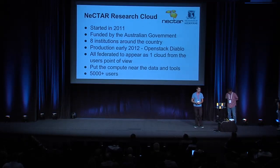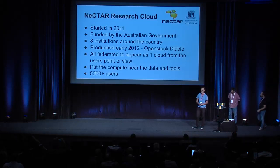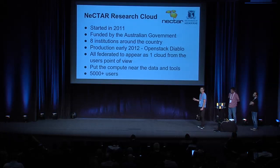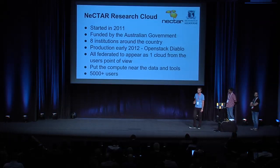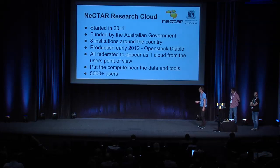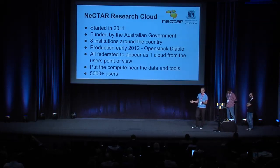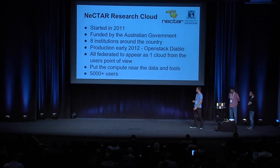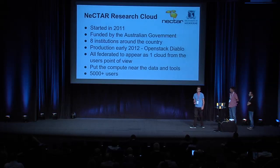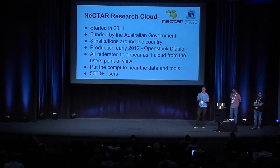We worked with some Rackspace developers, found a random GitHub branch somewhere and merged it. Thankfully, that got merged into Trunk, and now our cells are actually in OpenStack. The idea of the Nectar compute cloud is to try to get the compute near the data and the compute near the research tools. We wanted to federate that from a user's point of view to have one single cloud and an easy interface for them to get into.